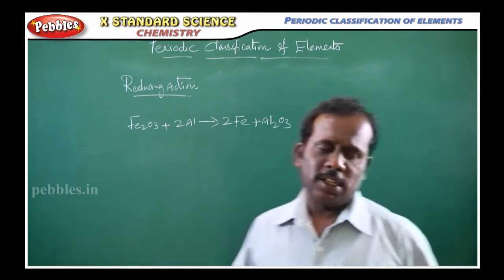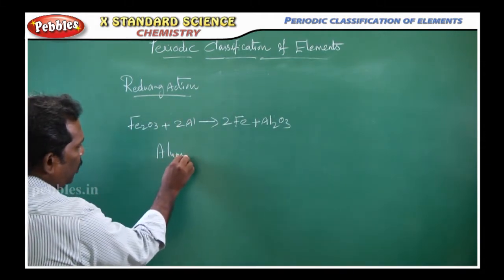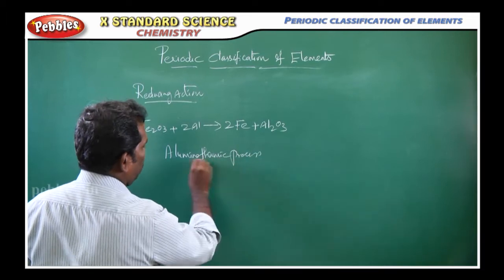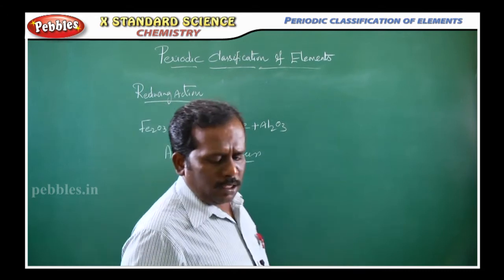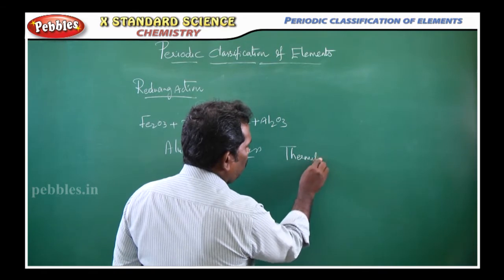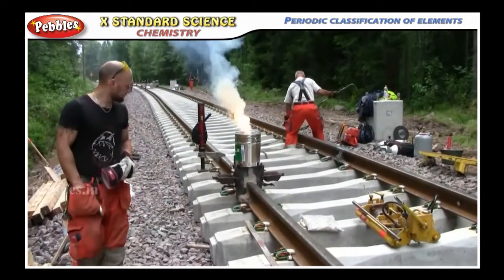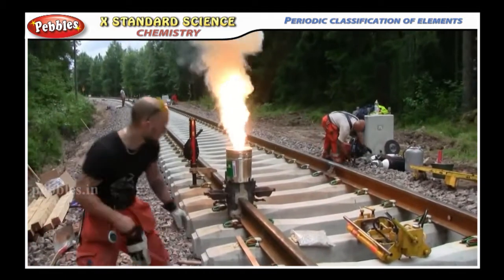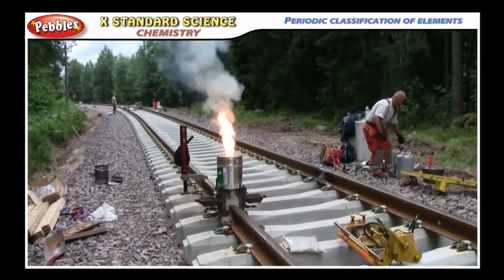This kind of process is called the alumino thermic process. This is mainly carried out in thermite welding. What is thermite welding? It is mainly used for joining the gap between broken pieces of railway tracks. This process is called thermite welding.